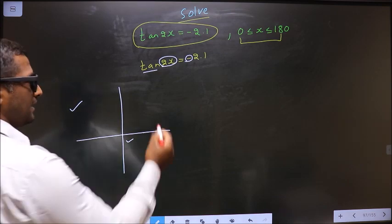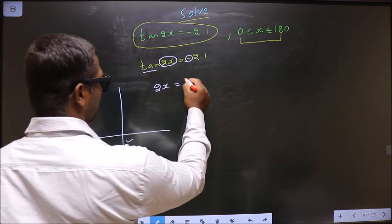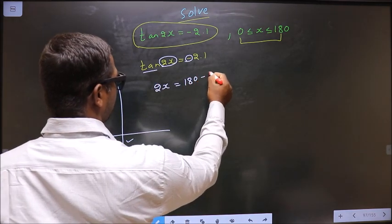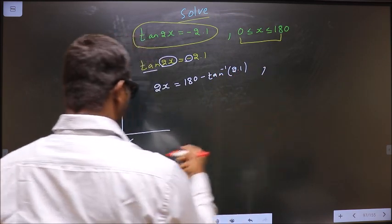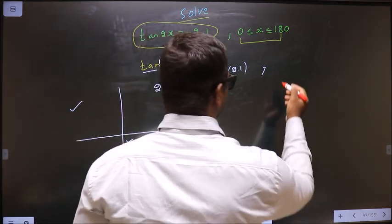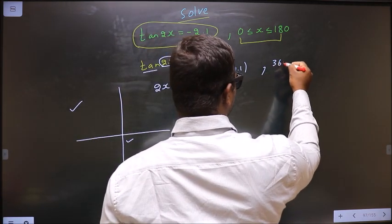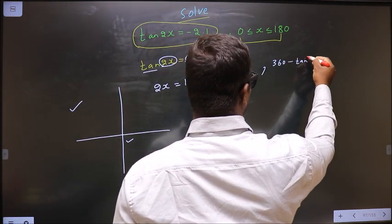To get an angle in the second, we should do 180 minus tan inverse 2.1. To get an angle in the fourth, we should do 360 minus tan inverse 2.1.